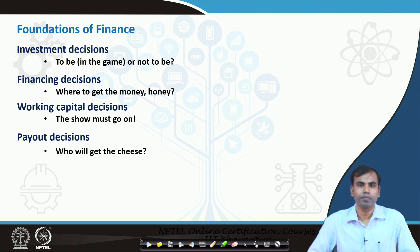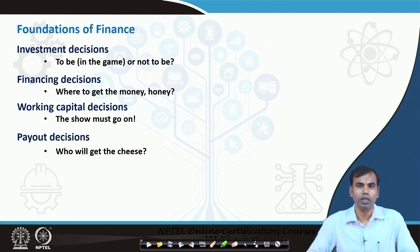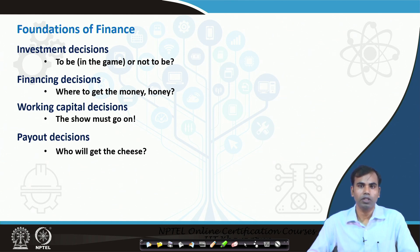To sum up this session: we have discussed the basic framework of financial decision making through the net present value approach, where we calculate the present value of all future cash flows and compare it with the initial investment to understand if benefits outweigh costs. We also understood that these decisions range from capital budgeting decisions to payout decisions. To conclude, these decisions are relevant to both individuals and corporations, and in the next session we will cover the basic theories of corporate finance and inputs from behavioral finance to understand how financial decision making can be made better. Thank you.